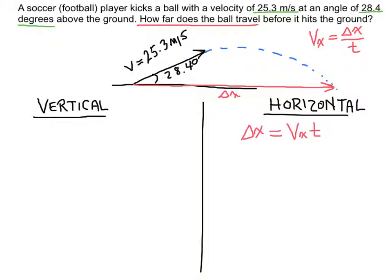The time refers to how long the ball is actually in the air. Almost always in a projectile motion problem, you find time using the vertical component. The thing that relates the vertical and horizontal components is time — so the time will be the same for both. We find time on the vertical side, transfer that over, and use it to find delta x.